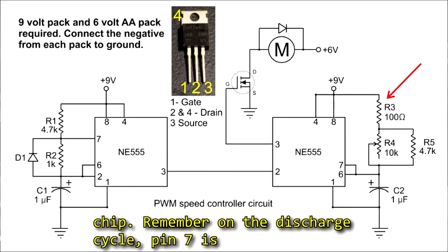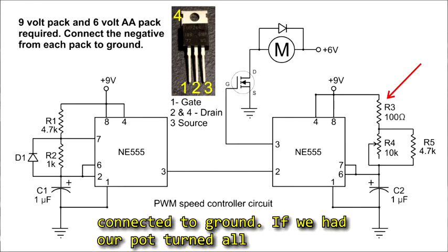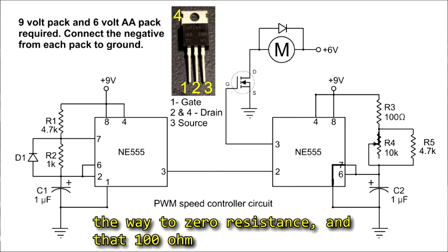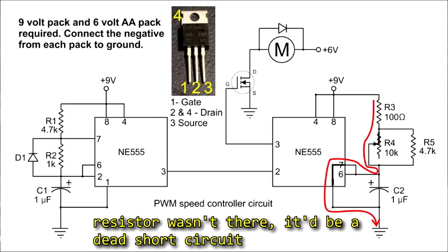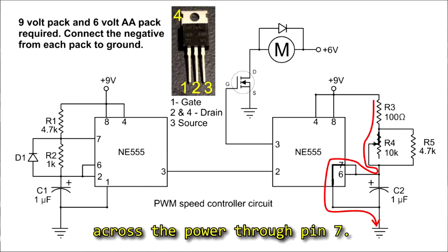Remembering on the discharge cycle, pin 7 is connected to ground. If we had our pot turned all the way to zero resistance, and that 100 ohm resistor wasn't there, it'd be a dead short circuit across the power through pin 7.